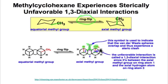That unfavorable interaction doesn't exist in the equatorial conformation, and it's therefore the reason that the axial conformation is less stable than the equatorial.